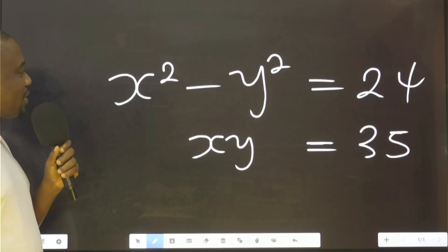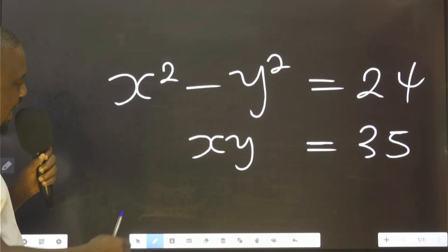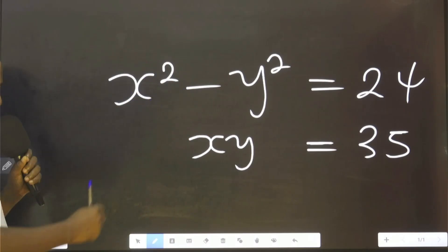Look at this question. It says x² - y² = 24, and xy = 35. We should find x and y.